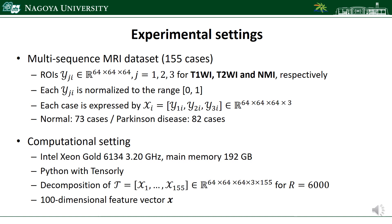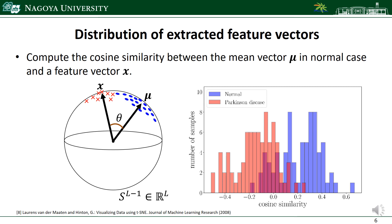In the experiments, we checked the distribution of extracted feature vectors. After normalizing by L2 norm, the feature vectors spread on the hypersphere. We computed the cosine similarity between the mean vector mu in the normal case and the feature vector. The right figure summarizes the different distributions in normal and Parkinson's disease cases. This result implies the discriminative performance of the proposed method.